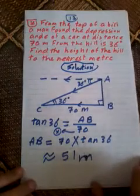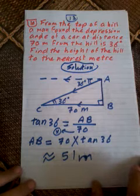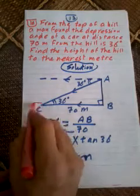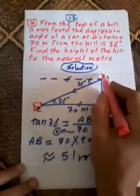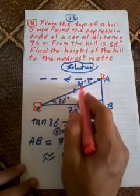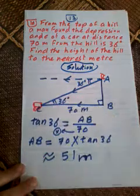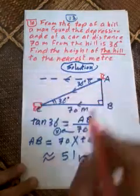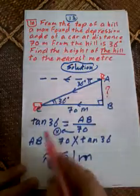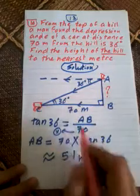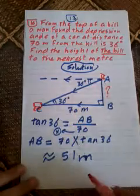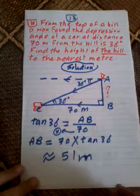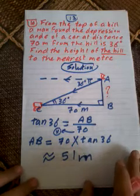From the top of a hill, a man found the depression angle of a car at a distance of 70 meters from the hill to be 36 degrees. The depression angle equals the alternate interior angle in the triangle. Applying tan 36 equals AB over 70 (opposite over adjacent), and solving by cross multiplication gives AB approximately equal to 51 meters, which is the height of the hill.